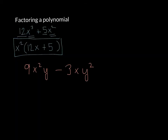Let's say I have 9x squared minus 3xy squared. The greatest common factor between the constants 9 and 3 is 3. For x, the greatest power I can take out is the lowest power — I have x squared and x to the first, so x to the first is all I can take out. Then I have y and y squared, so y is all I can take out. So 3xy would be my greatest common factor.